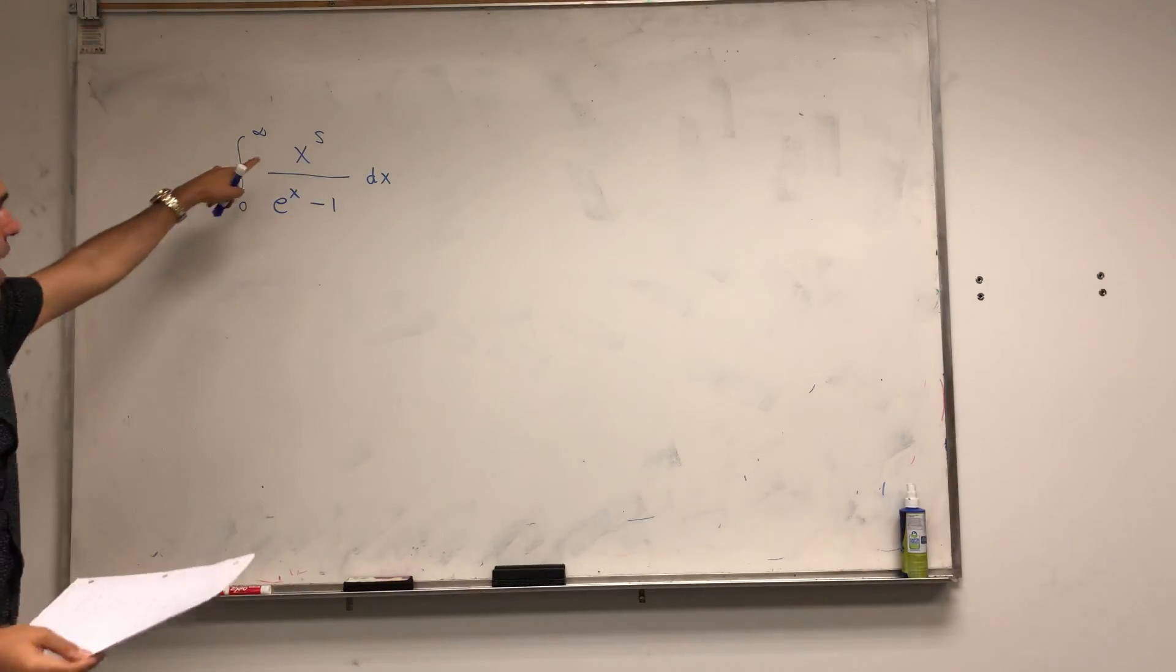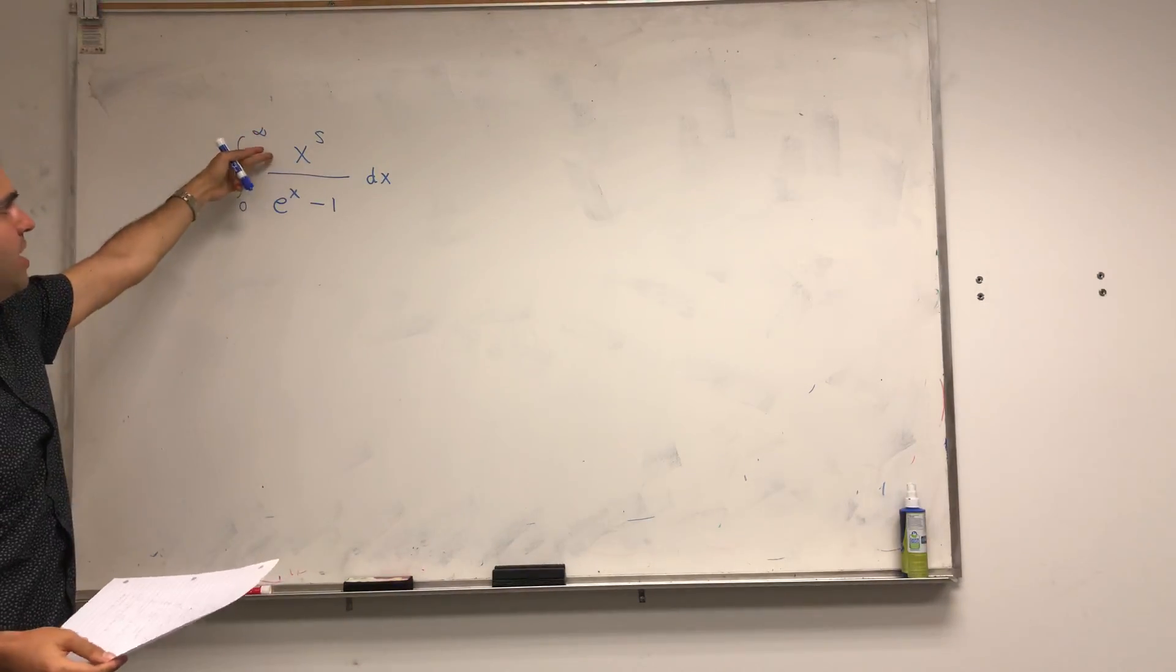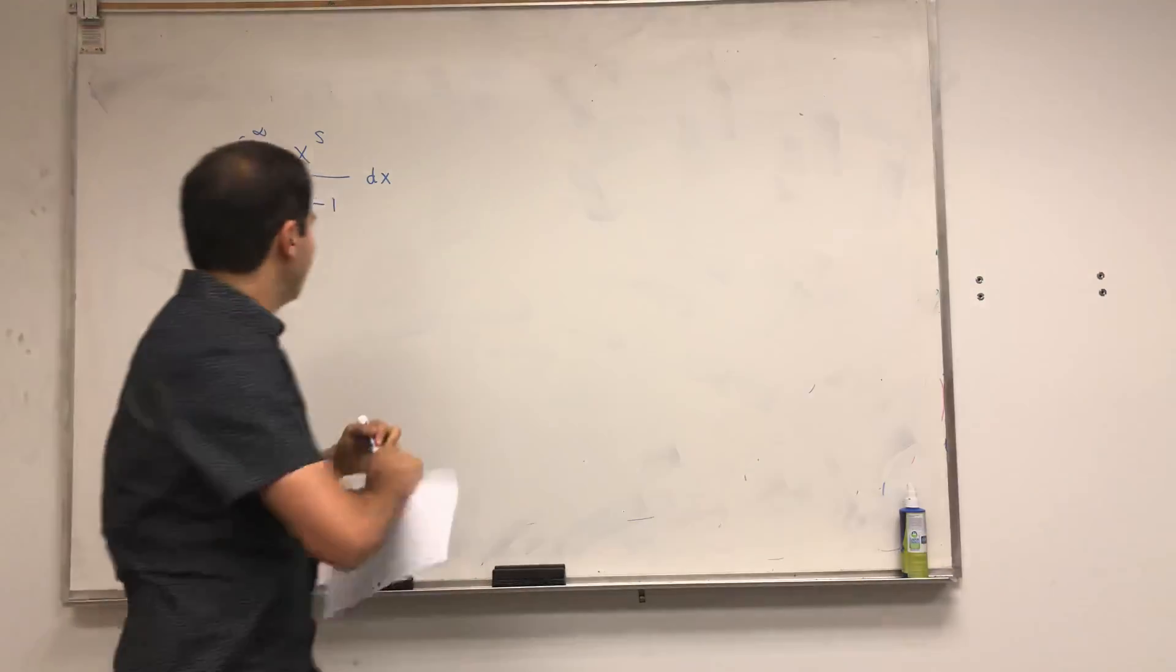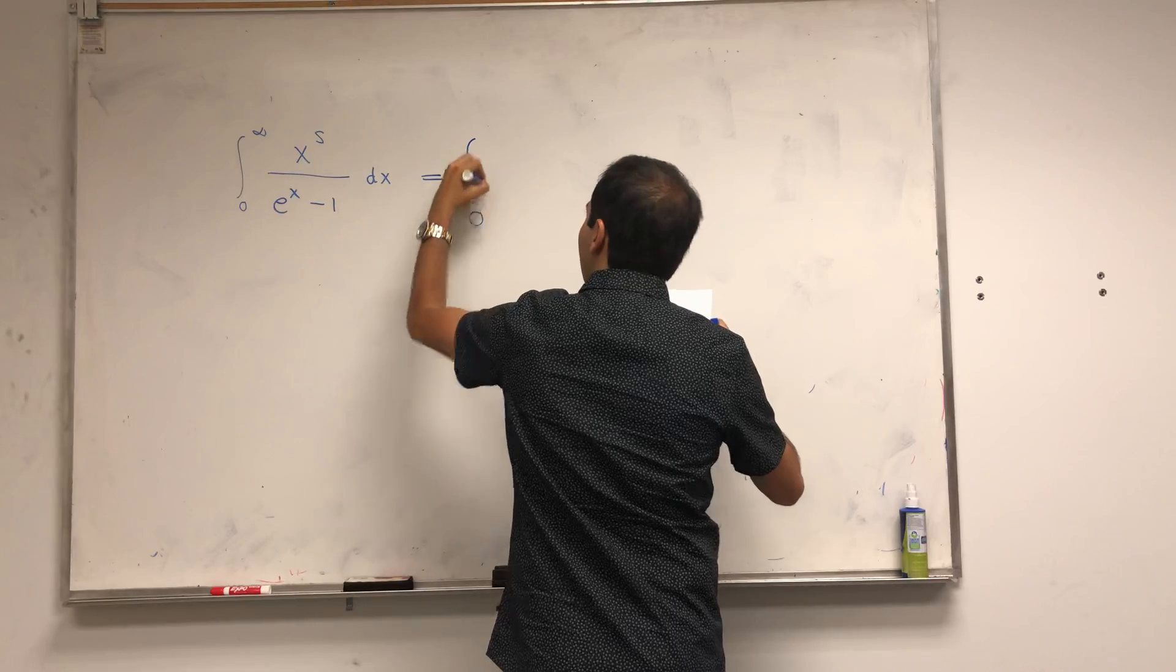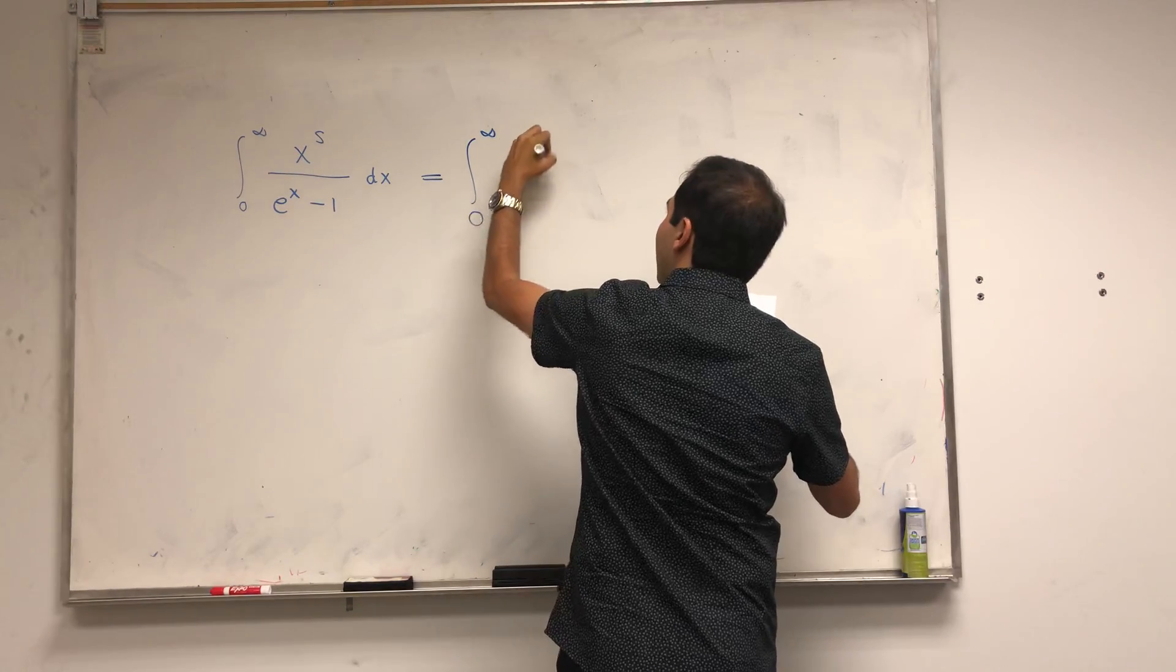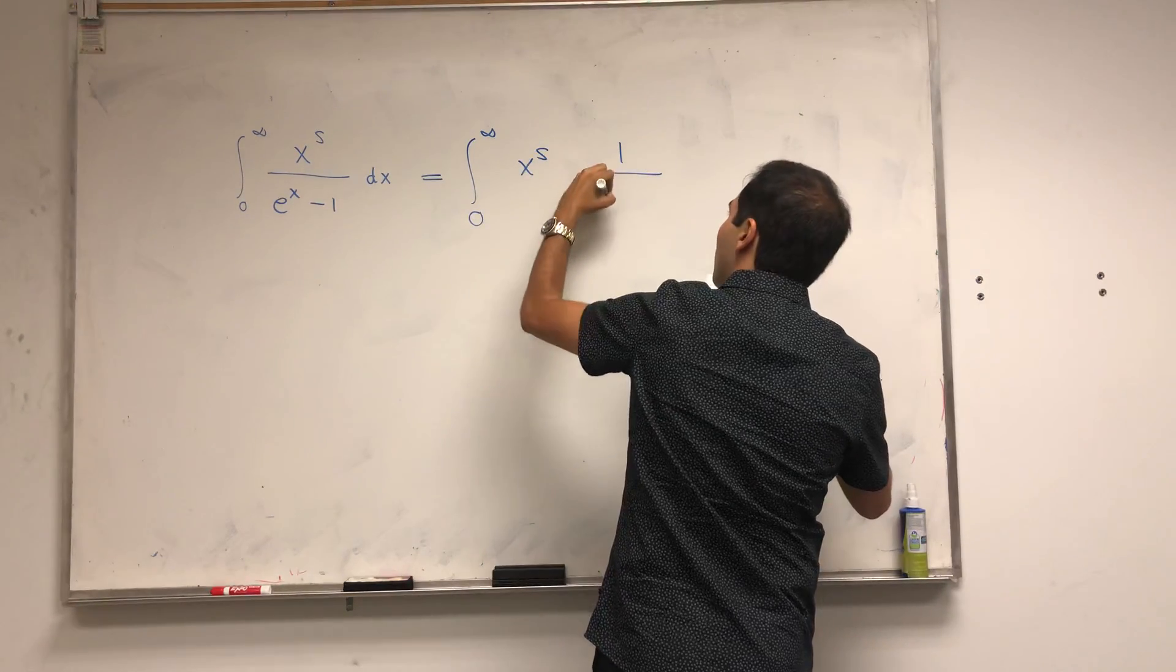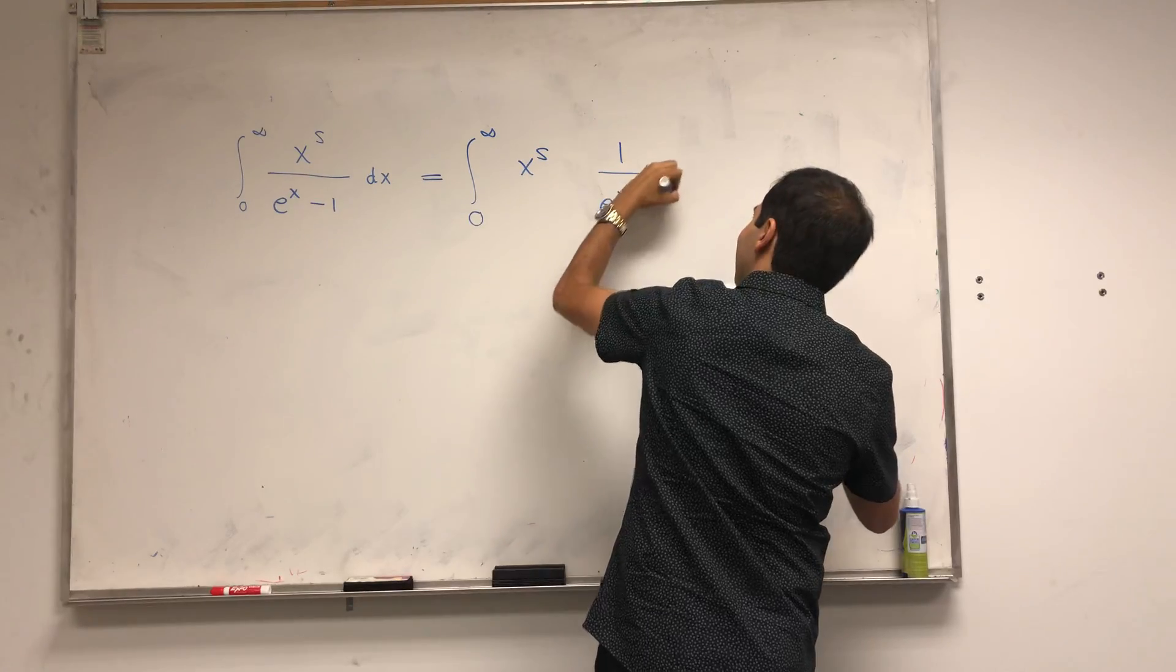And so this x to the s term is very nice, but we want to rewrite that 1 over e to the x minus 1 term here. So it's integral from 0 to infinity of x to the s over e to the x minus 1 dx.